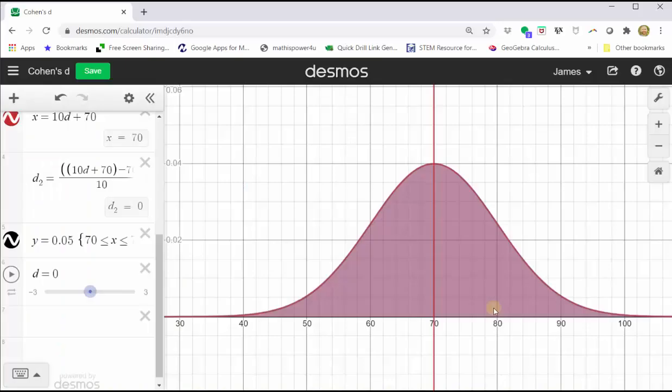Before we take a look at an example, let's take a look at an animation. Right now we have two distributions with the same mean. We will see how changing the value of d changes the distribution being considered.